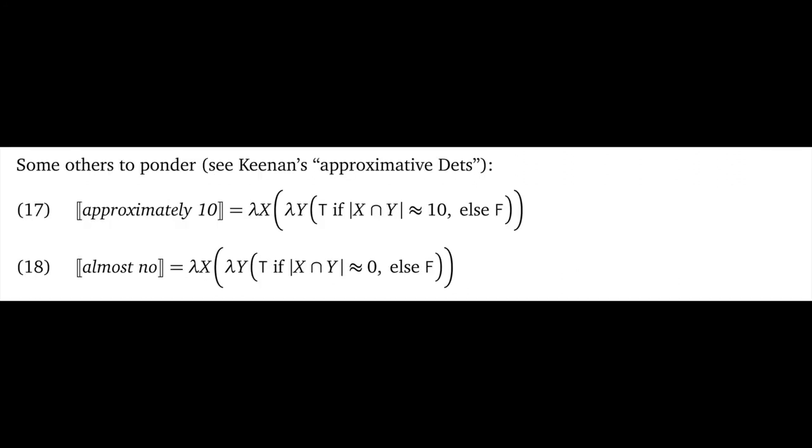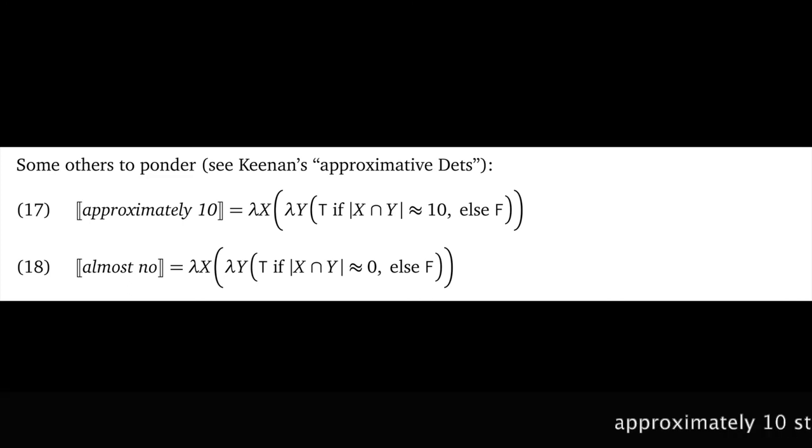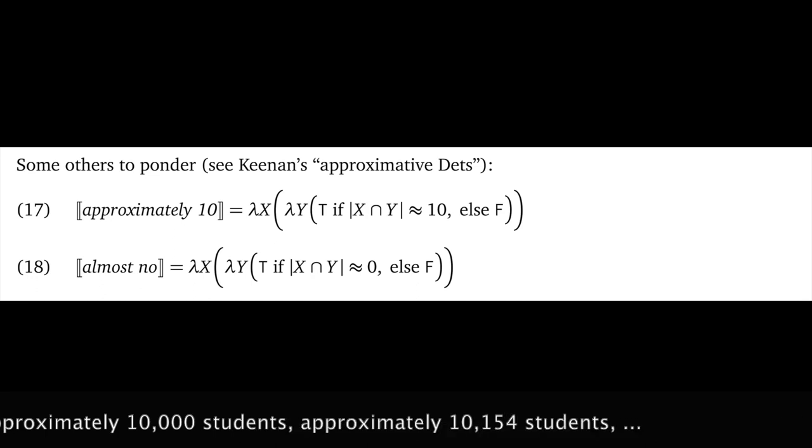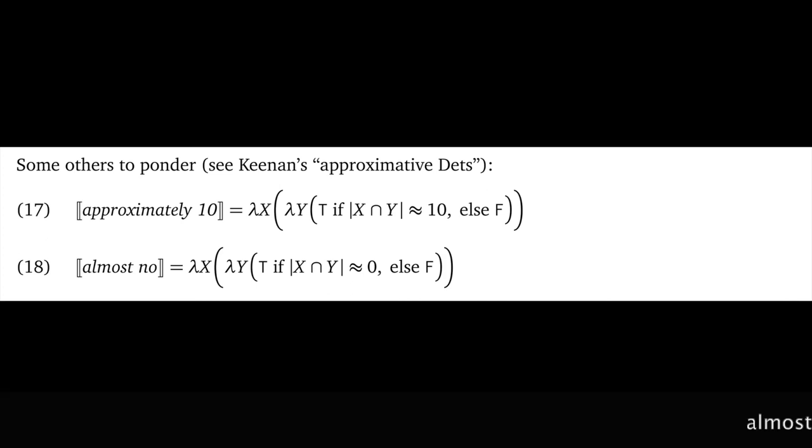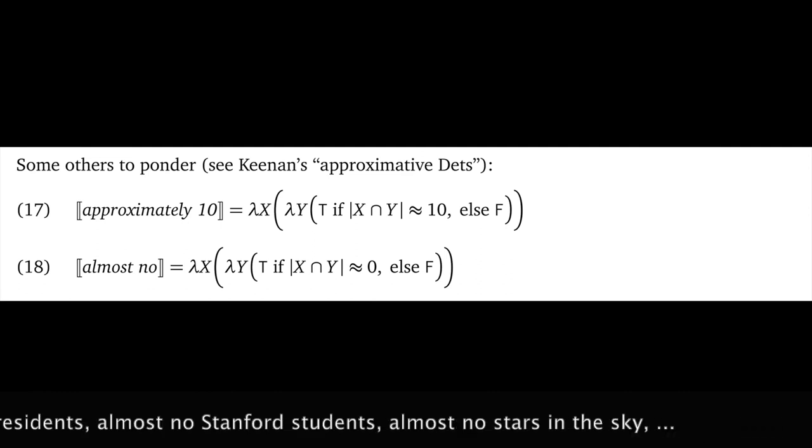A final note on context dependence. Keenan also discusses what he calls approximative determiners. These would be phrases like approximately 10 and almost no. These don't have pragmatic free variables in them, at least on the analyses I've given here, but they do have context dependence, since what counts as close enough might really be dependent on a lot of things. So, for example, I would expect approximately 10 students to be different from approximately 10,000 students, and different yet again from approximately 10,154 students. And I'd expect almost no U.S. presidents, almost no Stanford students, and almost no stars in the sky to all behave very differently from each other in terms of what counts as close enough.